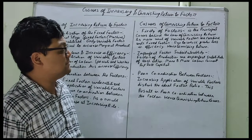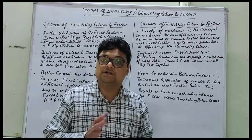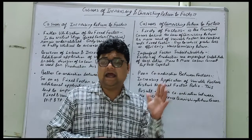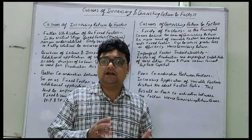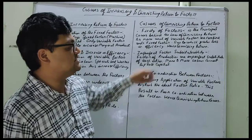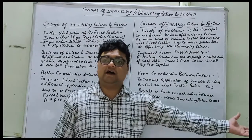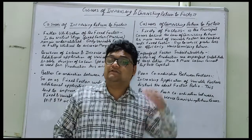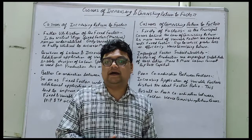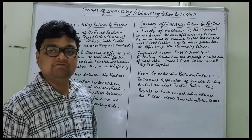The second cause is imperfect factor substitutes. Fixed factor and variable factor are not substitutes of each other. For example, tea and coffee are better substitutes for each other, but capital and labor are not better substitutes of each other. Factors of production are imperfect substitutes of each other — more and more labor cannot replace capital. For example, 5,000 laborers cannot replace 10 machines, and machines cannot replace labor either, so they are not perfect substitutes.